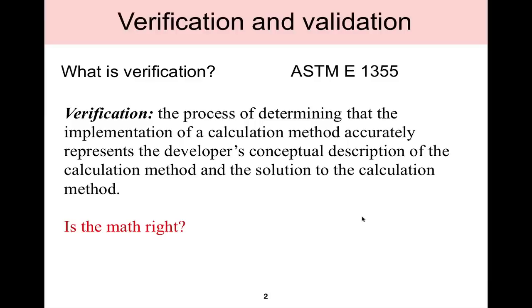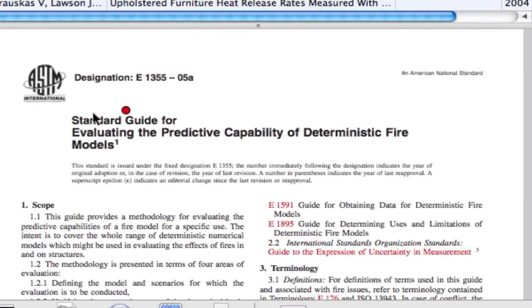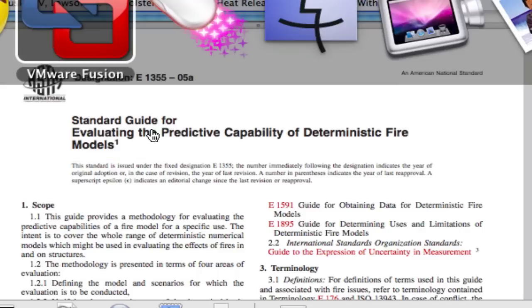Now, verification and validation have become an important topic in fire modeling, and I'd like to distinguish between the two before we move on. Verification is defined by ASTM E-1355, a standard guide for evaluating the predictive capability of deterministic fire models. This applies to zone models, field models, all types of fire models, and this guide lays out the process of verification and validation for both.